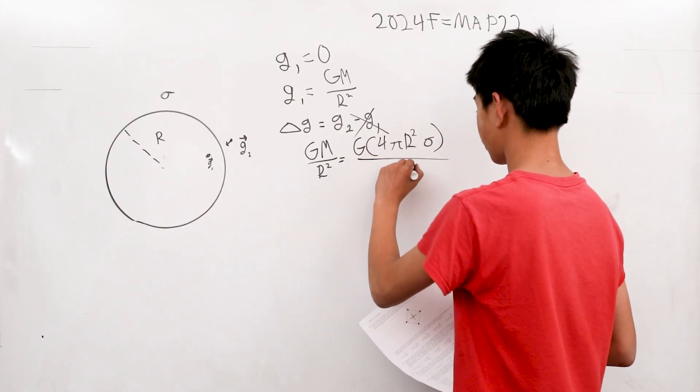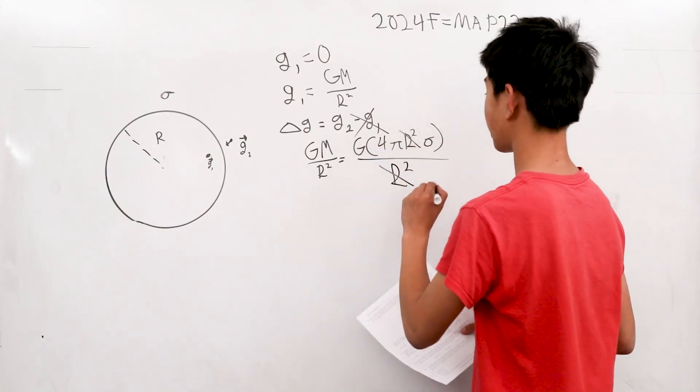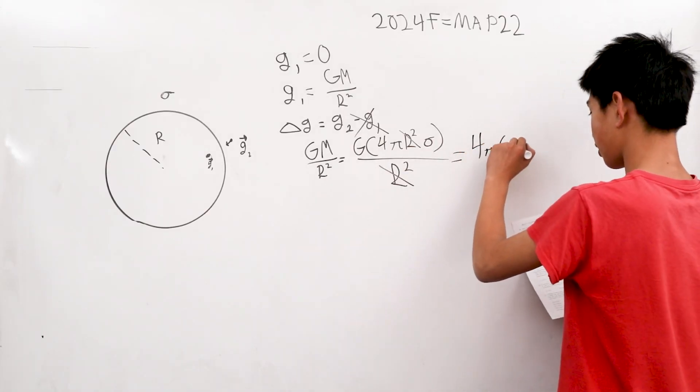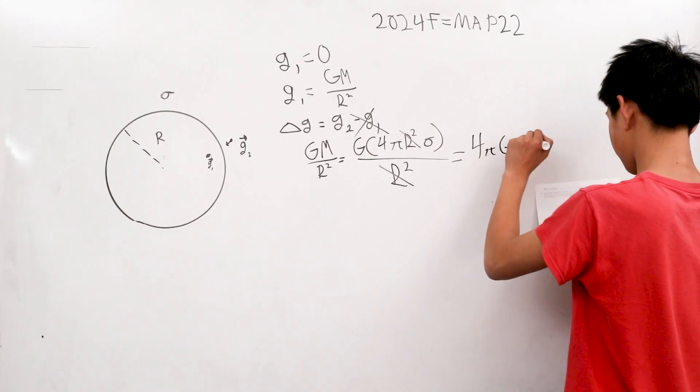And then divide that by R squared. These R squared cancel out and our answer becomes 4 pi times G times sigma.